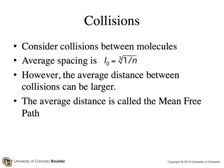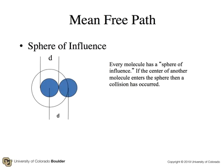So now, let's talk about collisions, collisions between molecules, which we've ignored so far. The average spacing is going to be equal to the cube root divided by 1 over the number density. However, the average distance between collisions can be quite large, or can be larger in an event. And the average distance is called the mean free path. So first of all, consider the following definition, the sphere of influence.